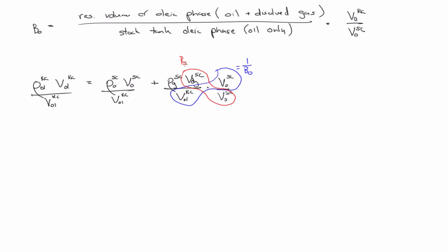RS is the volume of dissolved gas at surface conditions divided by the volume of oil at surface conditions — and that's what we have here: the volume of dissolved gas at surface divided by oil at surface.